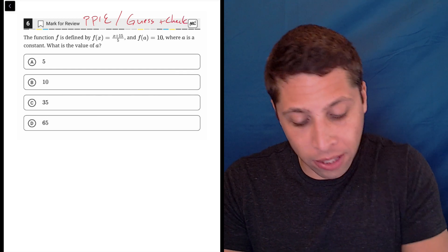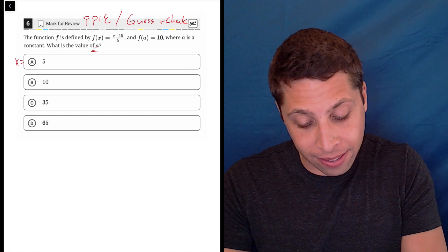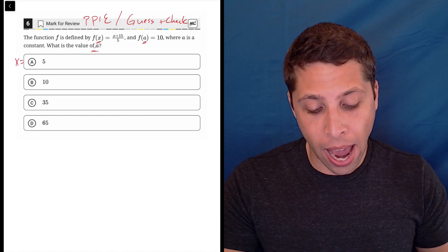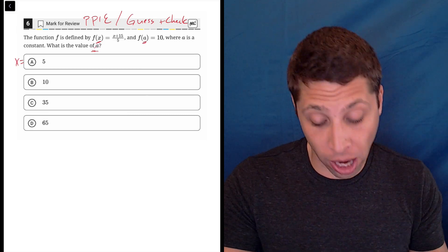What they're giving us here are a bunch of x-coordinates. I know they say A, but it's the x, what goes in the parentheses. And then we want to get out a y-coordinate of 10, so I would just guess and check with these.